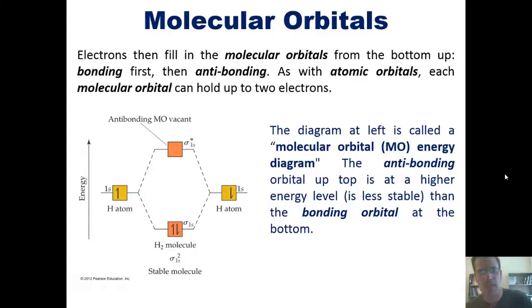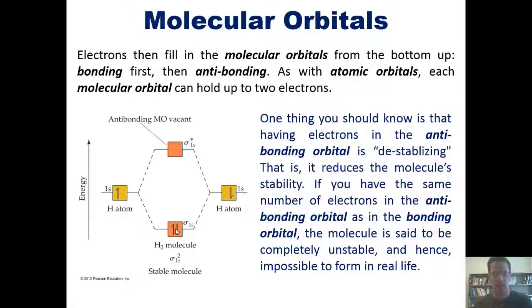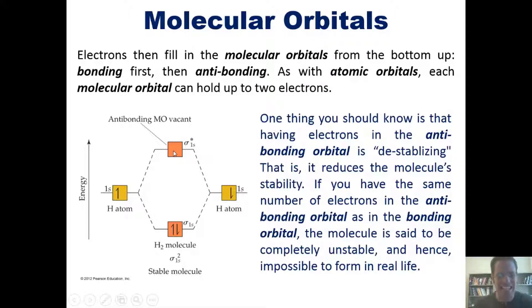This diagram is called a molecular orbital or MO energy diagram. The anti-bonding orbital at the top is higher in energy — less stable — than the bonding orbital at the bottom. One important thing to know is that having electrons in the anti-bonding orbital is destabilizing: it reduces the molecule's stability. If you reach the point where the number of electrons in the anti-bonding orbital equals the number in the bonding orbital, the molecule is completely destabilized.